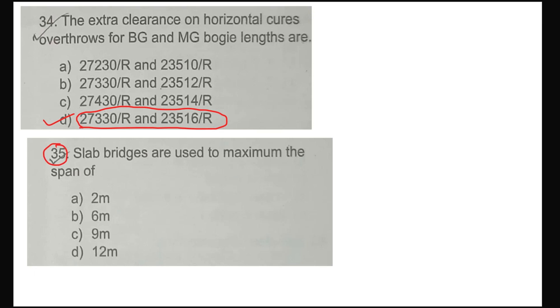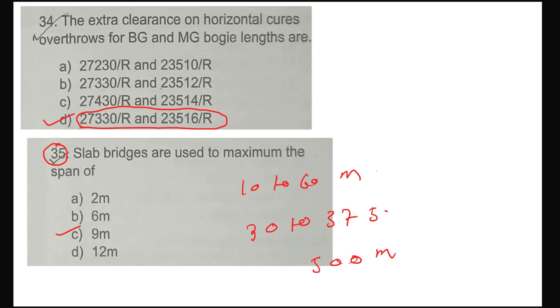Slab bridges are used to a maximum span of — option C — 9 metres. Girder and beam bridges: up to 10 to 60 metres. Truss bridges: up to 32 to 375 metres. Suspension bridges: 500 metres to 1.4 km — that is, 500 metres to 1400 metres maximum span.